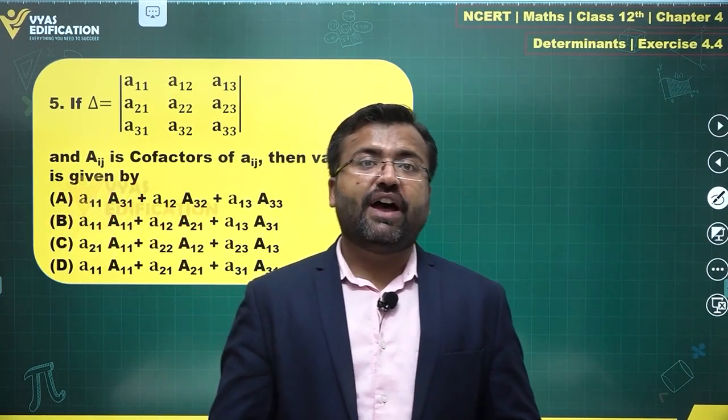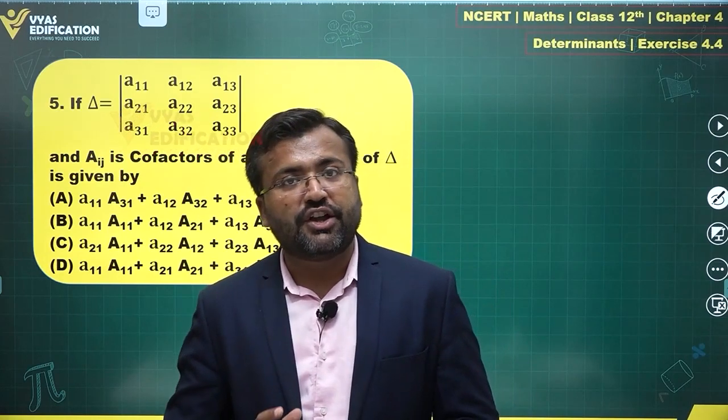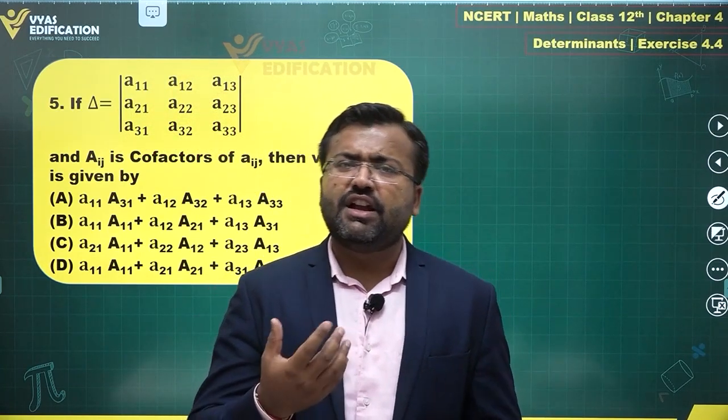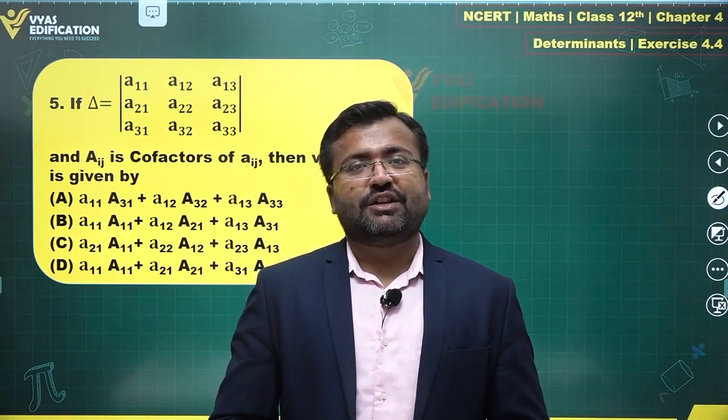Finding the value of a determinant using cofactors - that is, multiplication of elements of a row with corresponding cofactors will give us the value of the determinant. Similarly for a column as well. Till the next session, all the best!